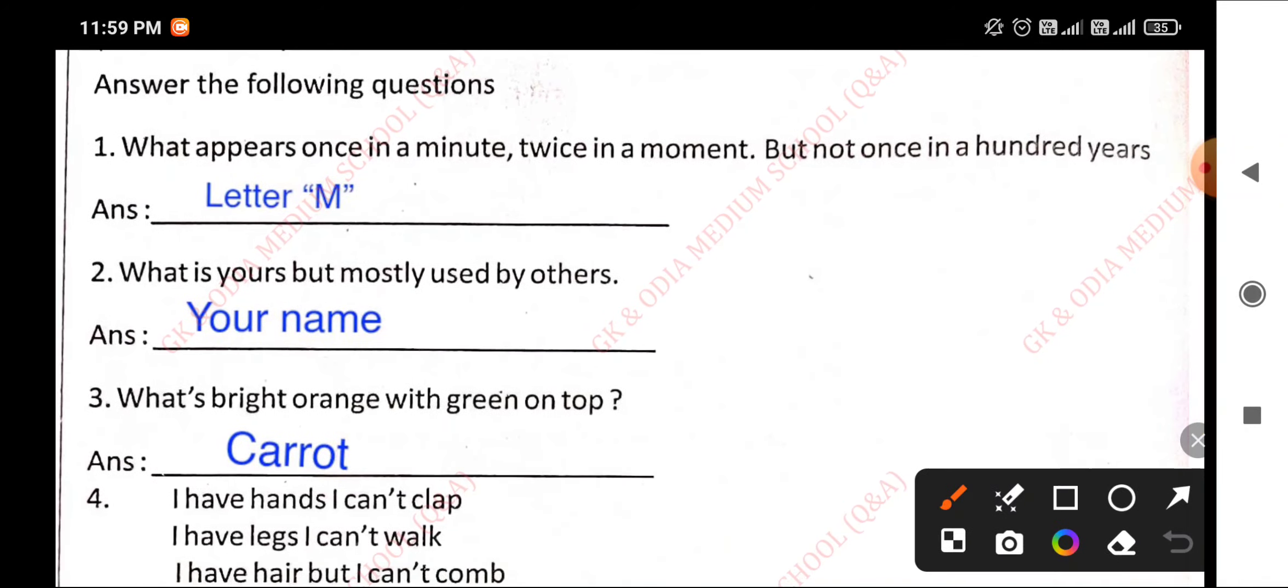What appears once in a minute, twice in a moment, but not once in a hundred years? Answer: Letter M. Because in minute there is one M, in moment there are two Ms, but in hundred there is no M.